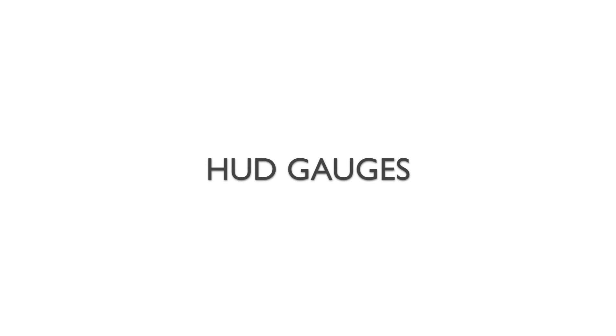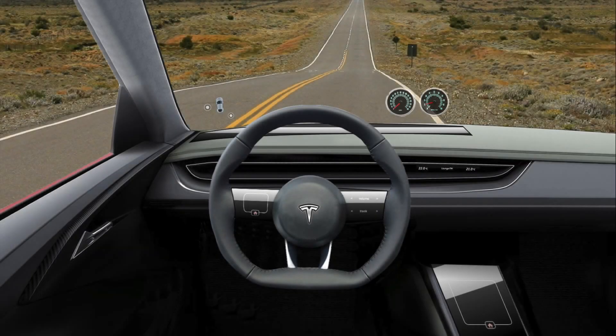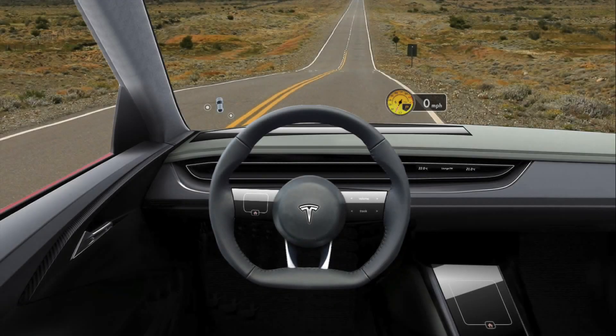Now let's look at the gauges on the windshield. First, we're going to demonstrate a Ford Mustang with its iconic 5-liter V8. Next, we have the Ferrari 458 with its high-revving naturally aspirated V8. You can even do some crazy stuff like this.